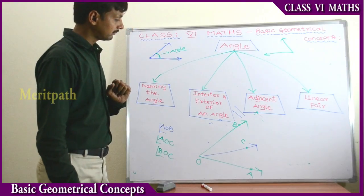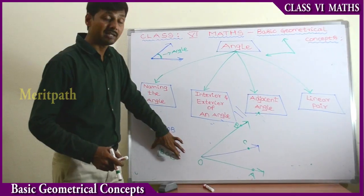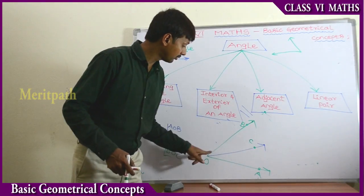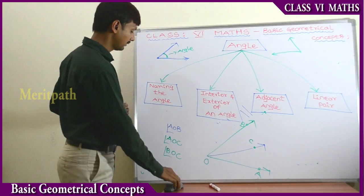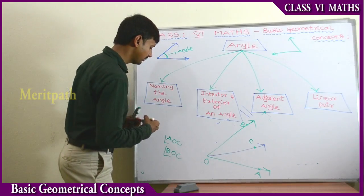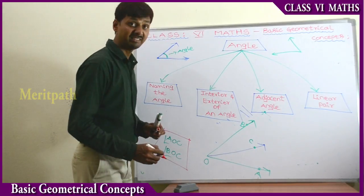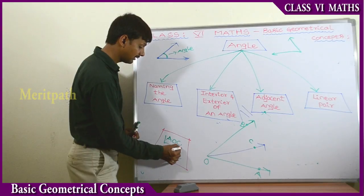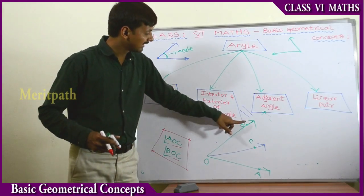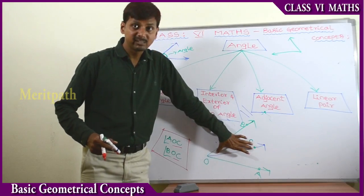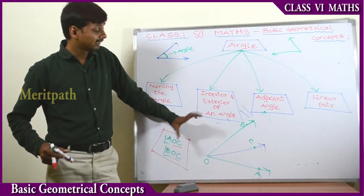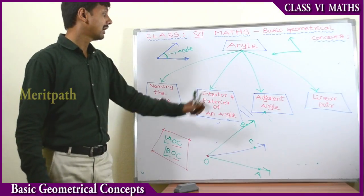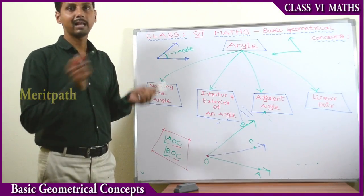For these two angles — angle AOC and angle BOC — OC is a common arm. OC is present in both angles and the common vertex is O. So OC is the common arm and O is the common vertex. This kind of angles with a common arm and common vertex are called adjacent angles.